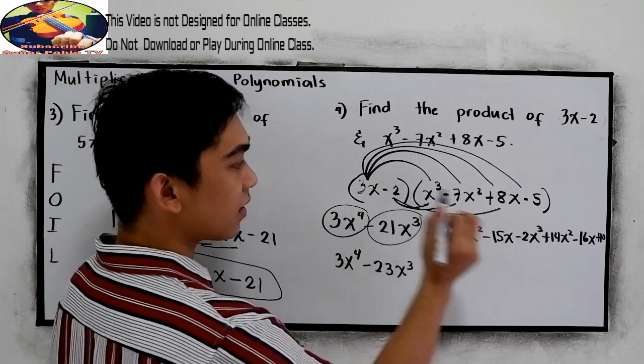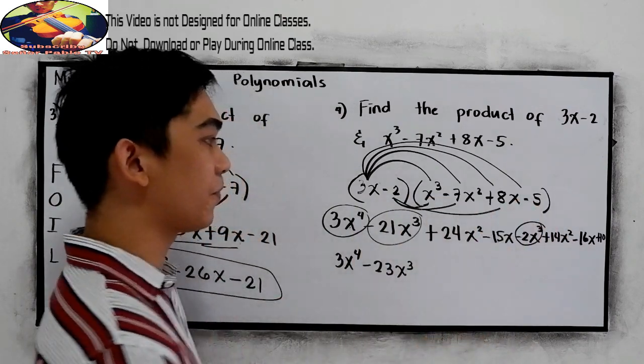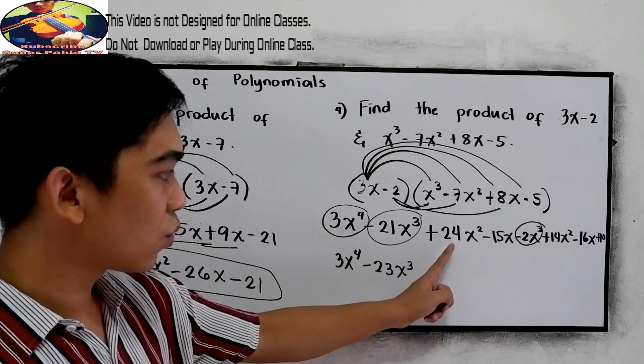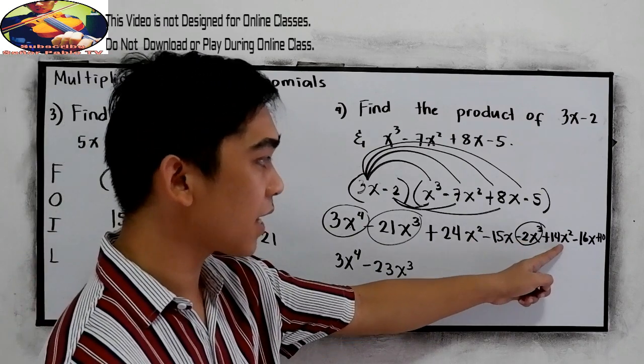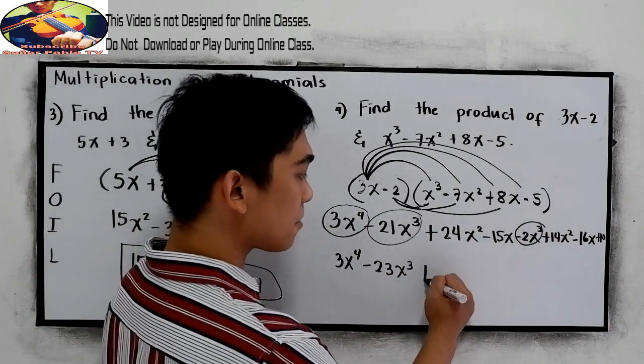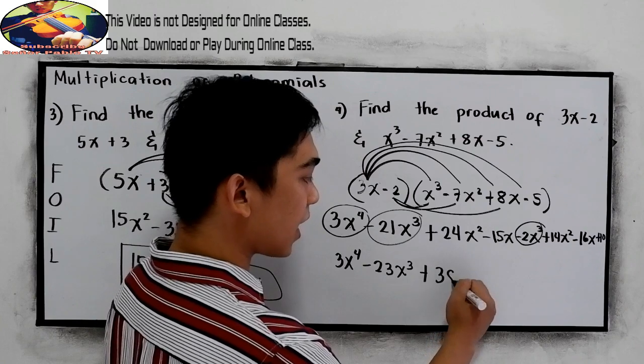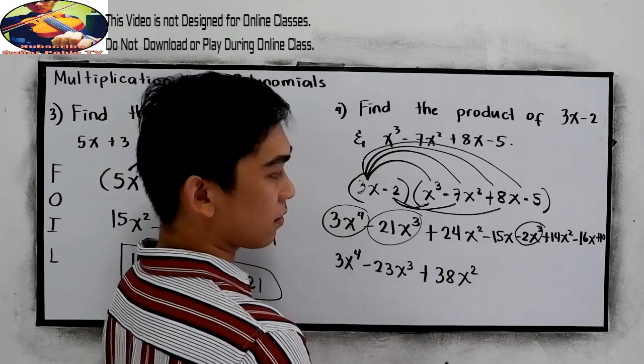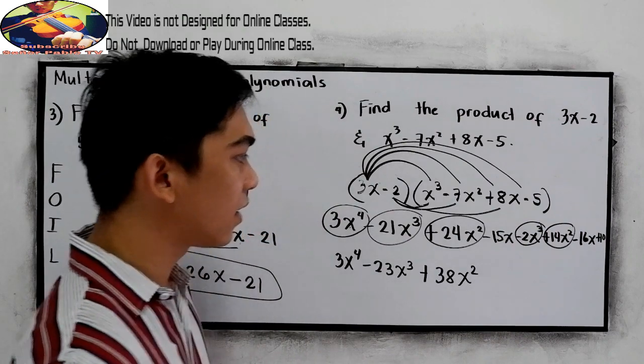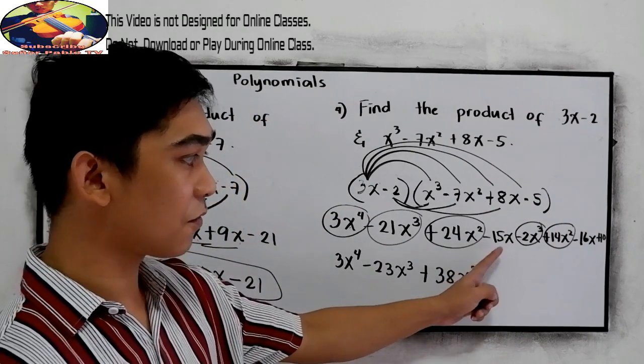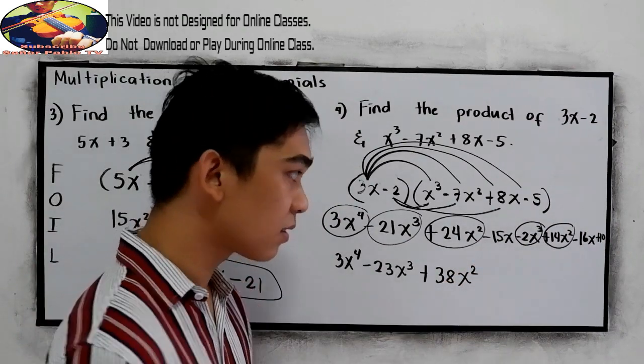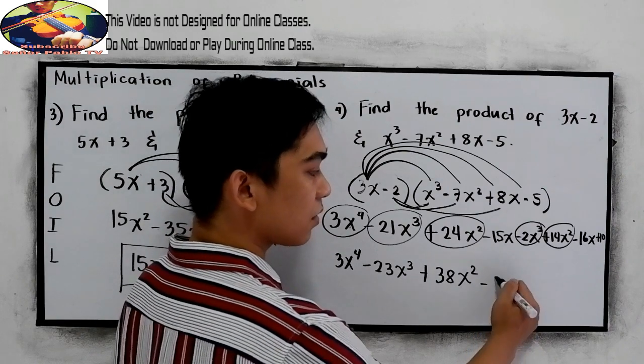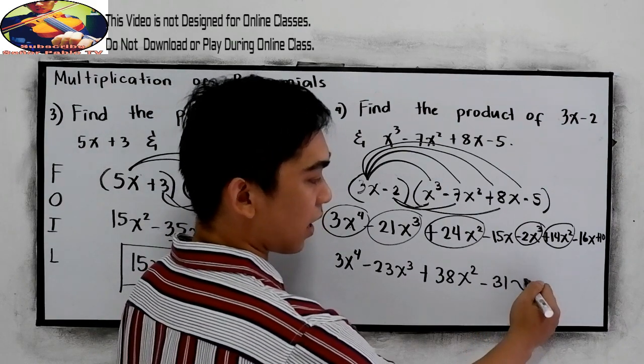For the x squared, 24x squared plus 14x squared. That is positive 38x squared. And for the x, negative 15x minus 16x. Negative 31x.